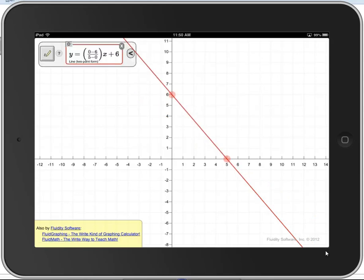Up in the left here, you'll see the algebraic form of this line. Lines happen to have multiple forms. This is a two-point form. If I click on the math itself, it'll cycle to another form of a line. This is the familiar slope-intercept form.